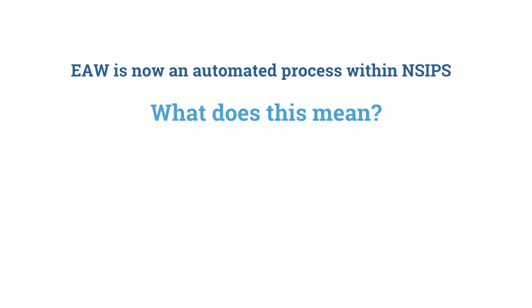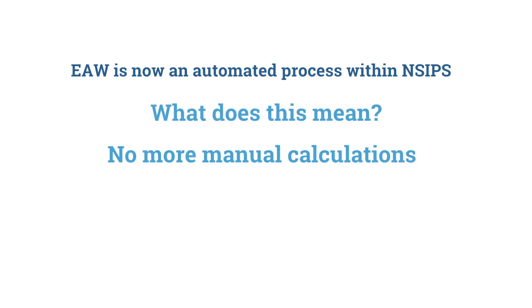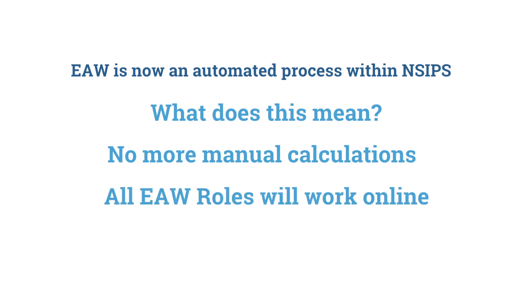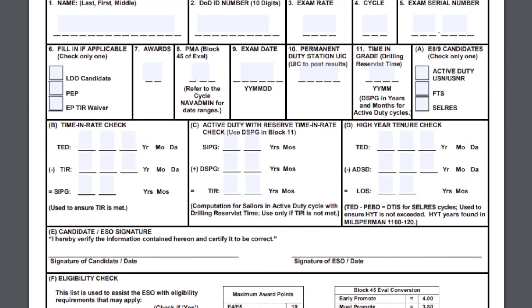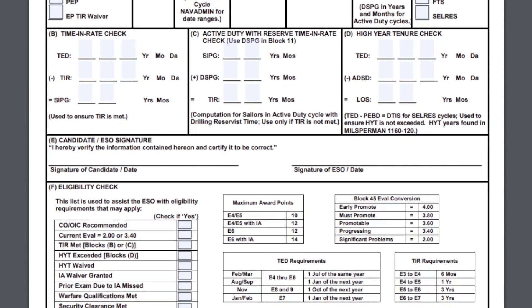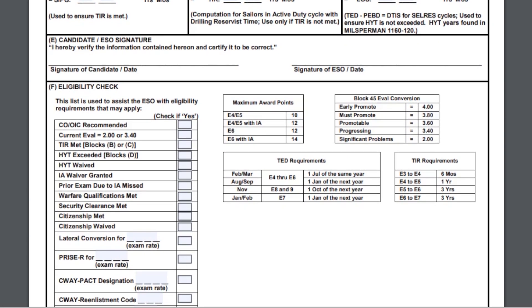EAW means no more manual calculations or paper worksheets. The Regional and Command Educational Services Officer, or ESO, as well as Command Reviewers, and you, will be able to leverage your online EAW. In short, a leaner, more accurate workflow that helps sailors advance.